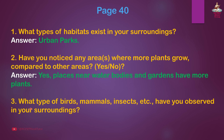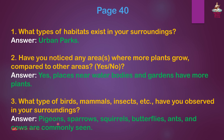Question 3: What types of birds, mammals, insects, etc. have you observed in your surroundings? Answer: Pigeons, sparrows, squirrels, butterflies, ants, and cows are commonly seen.